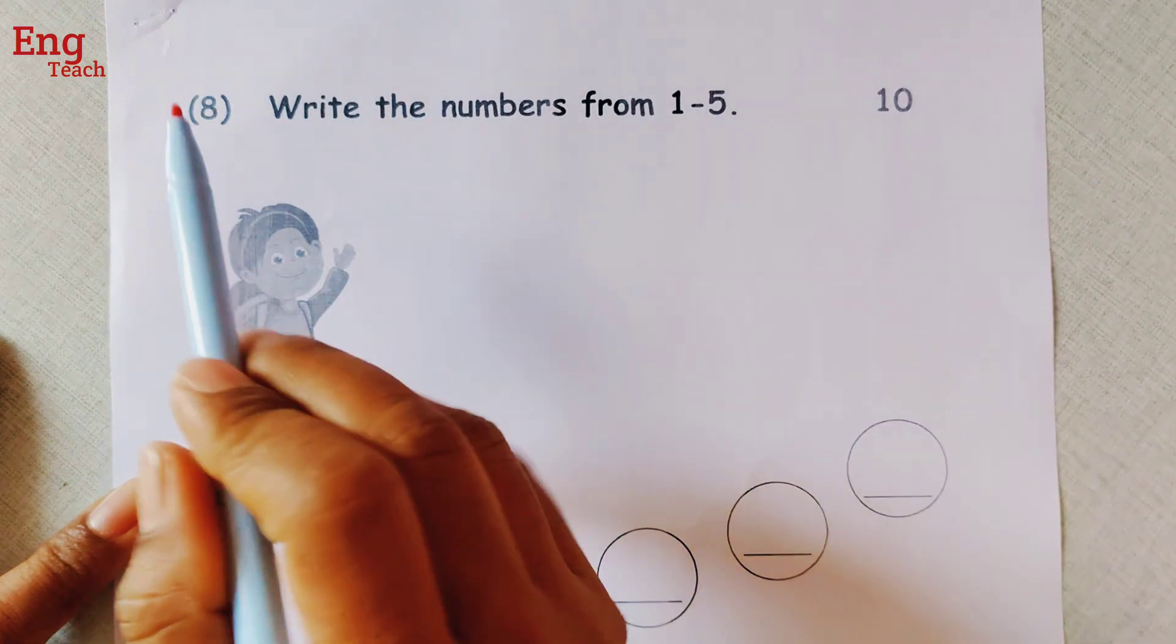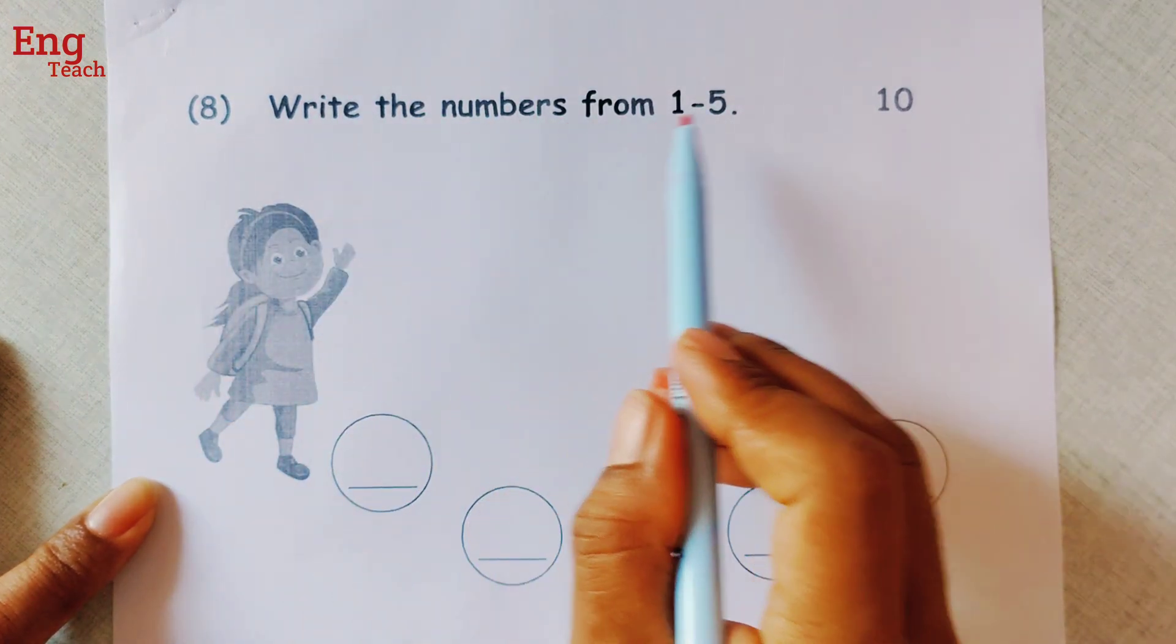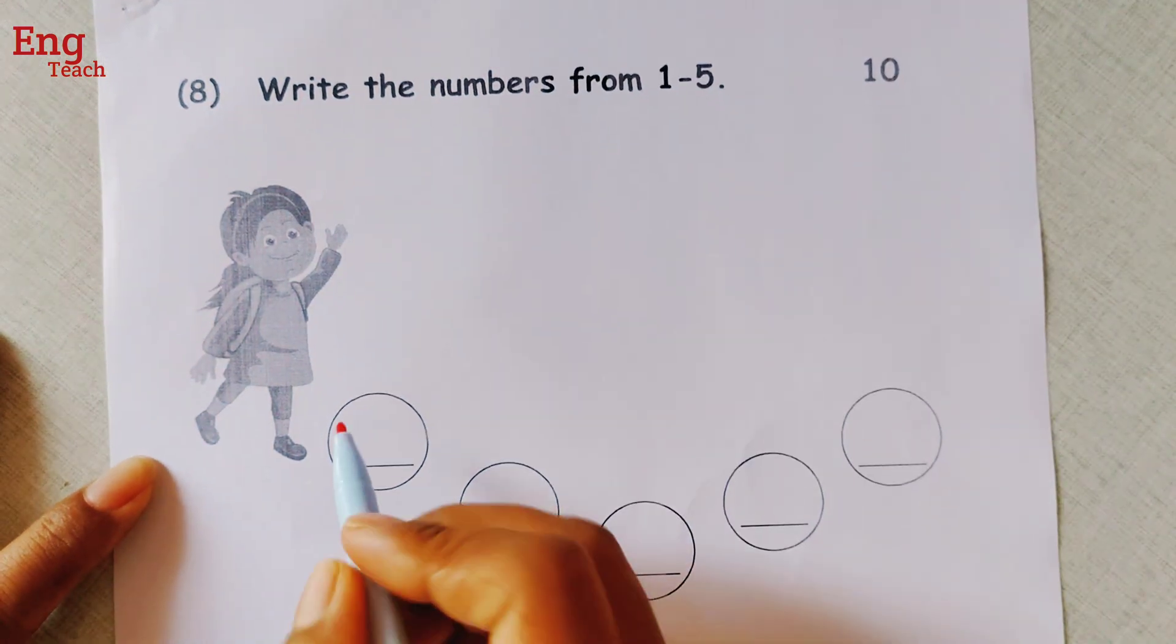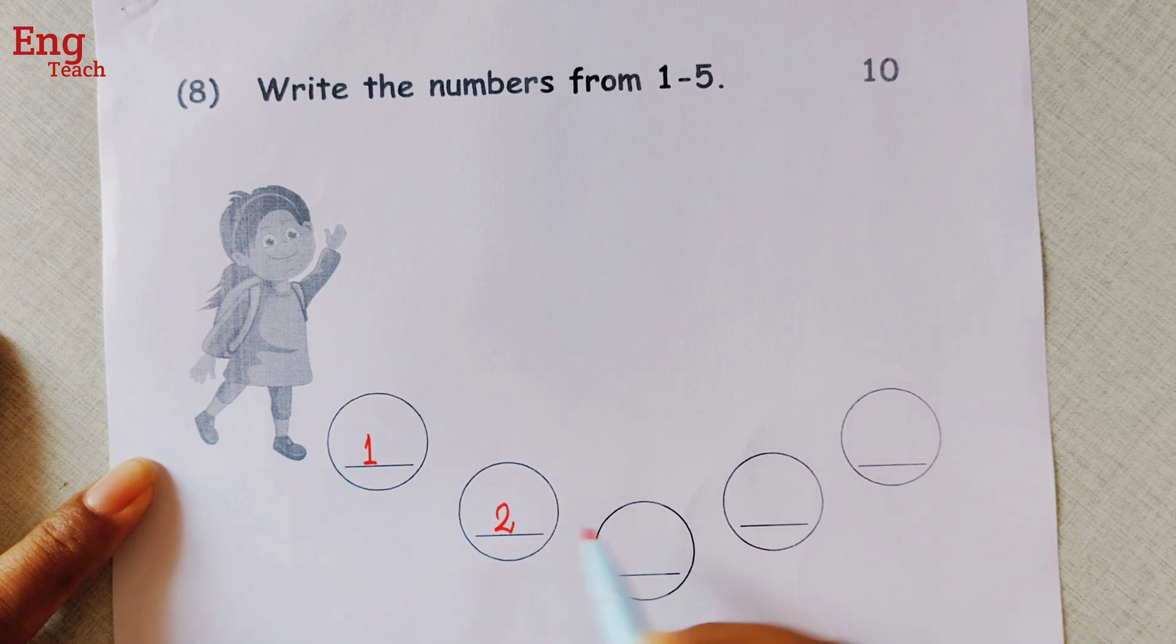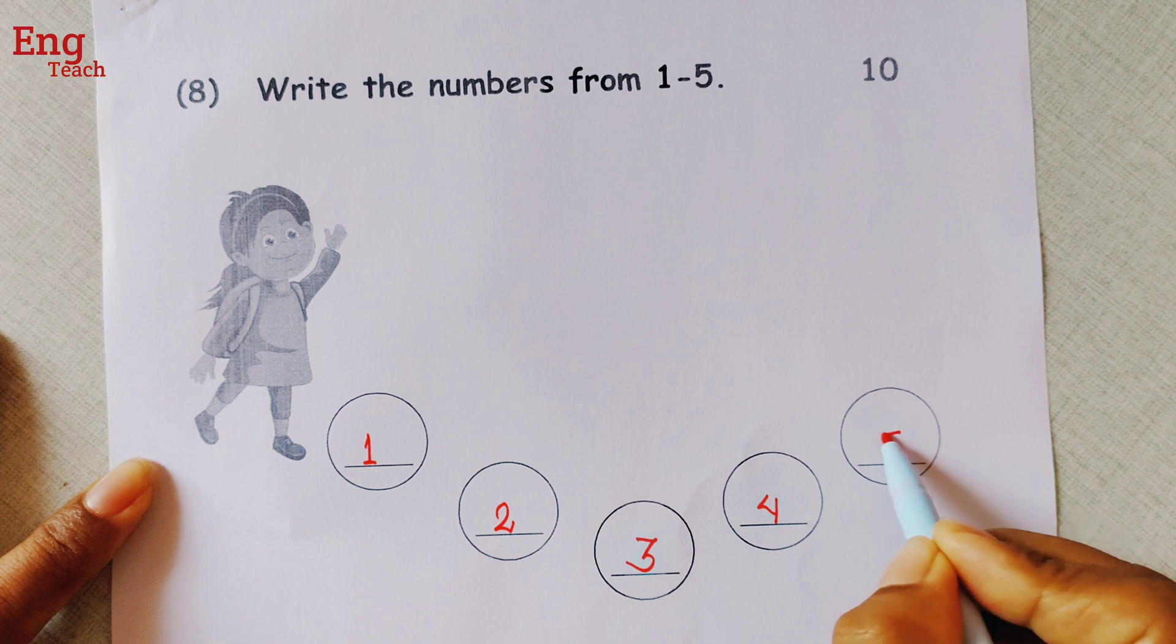And number 8, write the numbers from 1 to 5. Let's write. Number 1, 2, 3, 4, 5.